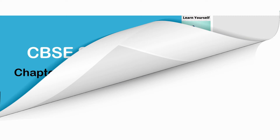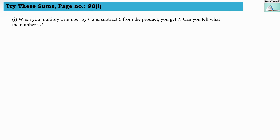Welcome to Learn Yourself. Try this sums page number 19 first. When you multiply a number by 6 and subtract 5 from the product, you get 7. Can you tell what that number is?